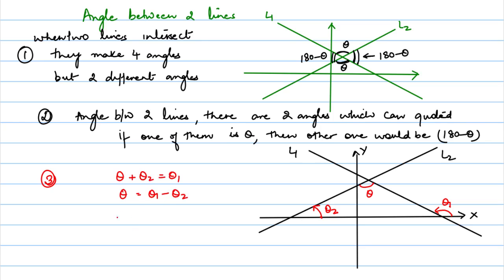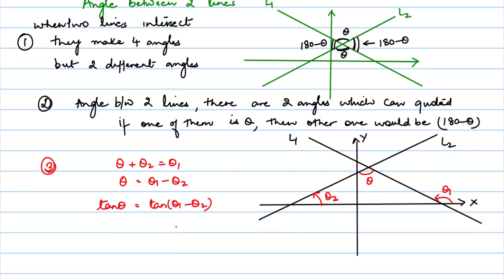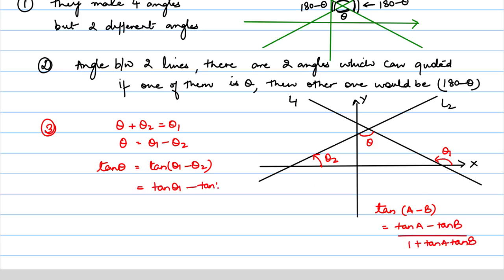Now, if these two angles are equal, their tangents will also be equal. If we take tan of both sides, we have tan(theta1 minus theta2). Using the tan subtraction formula, tan(a minus b) equals tan a minus tan b upon 1 plus tan a tan b. In place of a we have theta1 and in place of b we have theta2. Therefore, we can write this as tan(theta1) minus tan(theta2) upon 1 plus tan(theta1) times tan(theta2).